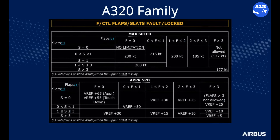For A320, A330, and A340 family aircraft, the FCOM and the QRH provide tables with max speeds not to exceed and approach speeds to follow in these events. For A350 and A380 aircraft, these tables can be found in the FCOM as well. Tables are based on the slats and flaps angular position and not on the flaps lever position. Remember that the same flaps lever positions can correspond to the same or different angular position, so it is important to understand the real aircraft configuration.